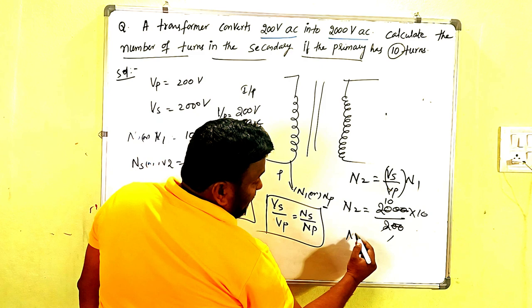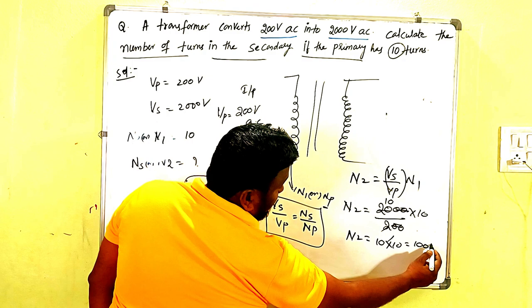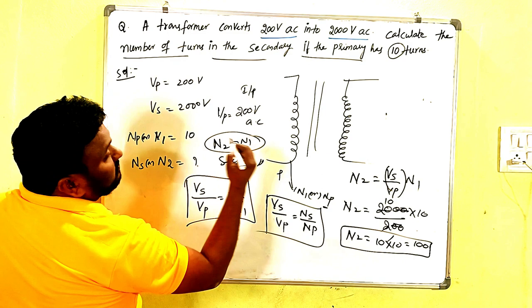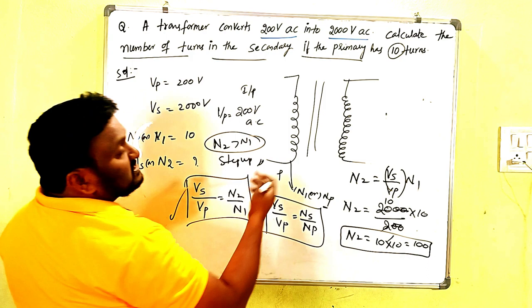So two zeros, two zeros cancel. Two ones are two, tens are then N2 equals what? 10 into 10, 100 turns. 100 turns in the secondary coil. And here N2 is greater than N1, so the given transformer is a step-up transformer. This is the simple way to find out the number of turns in the secondary coil by using this relation.